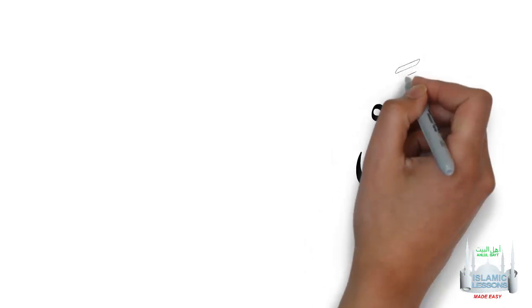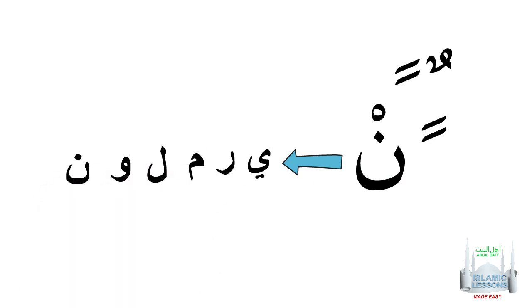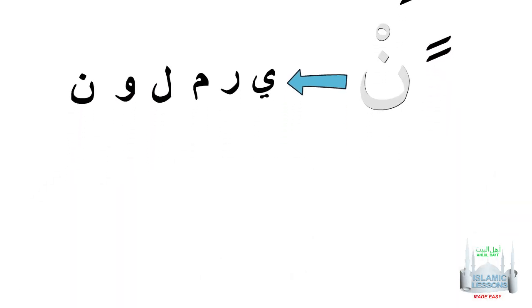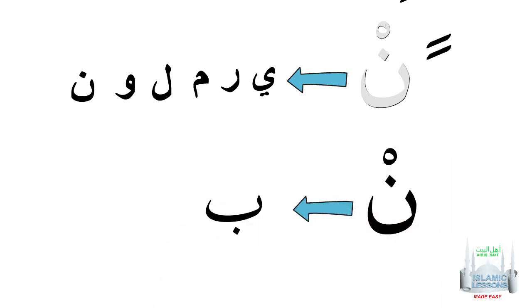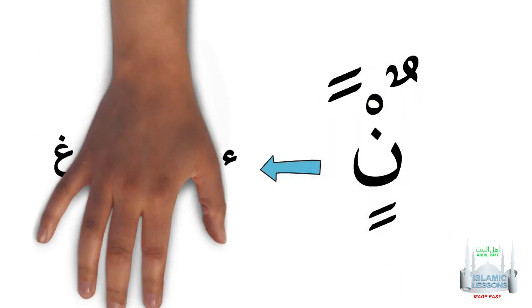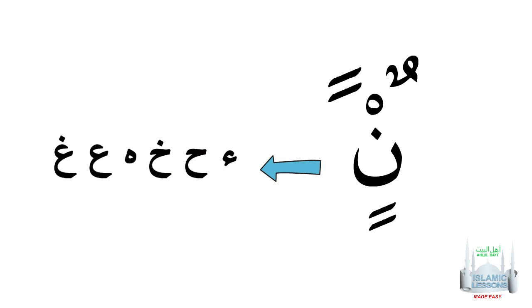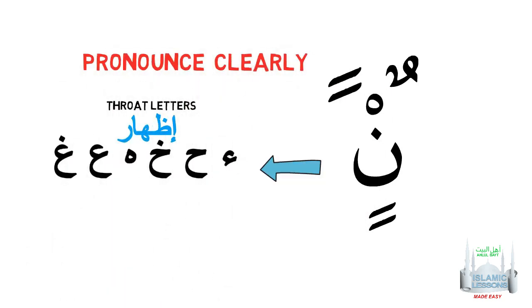We have learned that when you have a noun sakin or tanween followed by a yarmaloon letter, the noun gets dropped. We also learned that when there is a noun sakin followed by a ba, the noun changes to a meem sound. Now if there is a noun sakin or tanween followed by these six throat letters, which are known as letters of idhaar, then you pronounce the noun or tanween clearly without gunna or ikhfa.